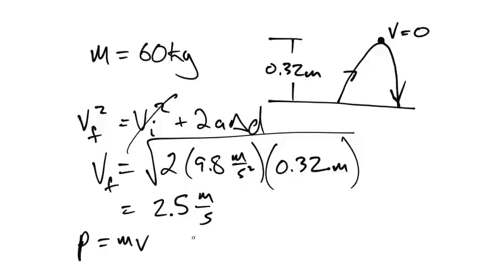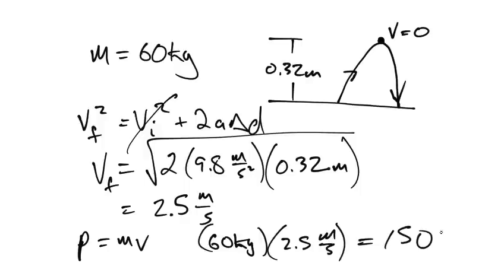And hence, we just have to multiply that by 60. And we're going to get 150. So 60 kilos times 2.5 meters per second is going to give us 150, approximately 0.3 kilogram meters per second.